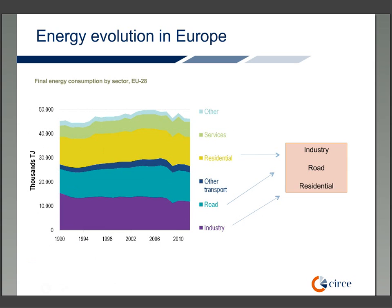Changing the approach, in this figure we can see the final energy consumption in the European Union, represented by sectors. The data demonstrate that there are three main sectors which account for the highest energy consumption values, mainly in heat or electricity. They are industry, road transport, and the residential sector, with similar shares in 2012 as can be seen in the figure. On the other hand, services or other transport showed quite low consumption in comparison with the other three main sectors.